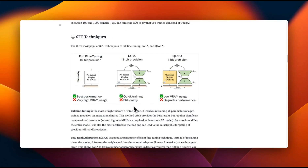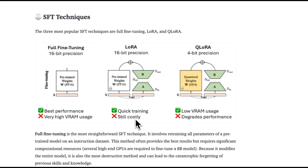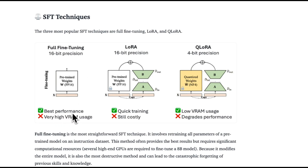Let's talk about different supervised fine-tuning techniques, since we are going to be doing supervised fine-tuning in this video. There are three popular options. The first one is full fine-tuning — you take the original model and update the weights with the instruction fine-tuning dataset that you have. This will give you the best performance depending on how much data you have, but the GPU VRAM requirement is going to be pretty high.